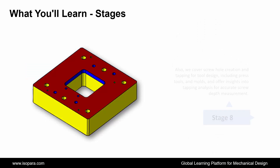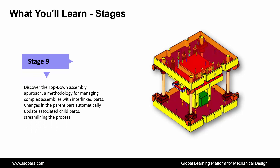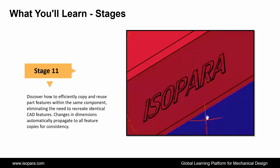Next, we cover screw hole creation and tapping for tool design, including press tools and molds, and offer insights into tapping analysis for accurate screw depth measurement. Next, discover the top-down assembly approach, a methodology for managing complex assemblies with interlinked parts — changes in the parent part automatically update associated child parts, streamlining the process. Next, explore using a single feature across multiple locations, a technique favored in automotive and aerospace design. And last, discover how to efficiently copy and reuse part features within the same component, eliminating the need to recreate identical CAD features. Changes in dimensions automatically propagate to all feature copies for consistency.